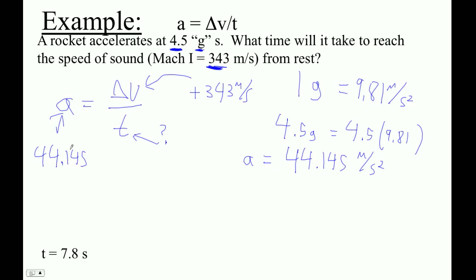And now we're all set. We can just set this thing up. So let's go 44.145 is equal to 343 over some amount of time.